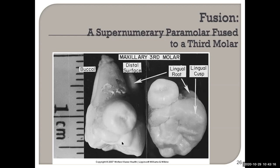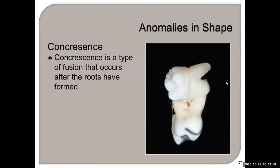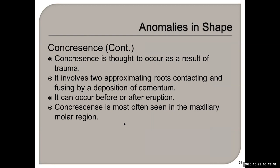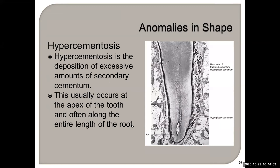A paramolar is usually not distal to a third molar — it's usually on the buccal or lingual. Concrescence is a type of fusion that occurs where only the roots are fused. It's thought to occur as a result of trauma and is most often seen in the maxillary molar region.